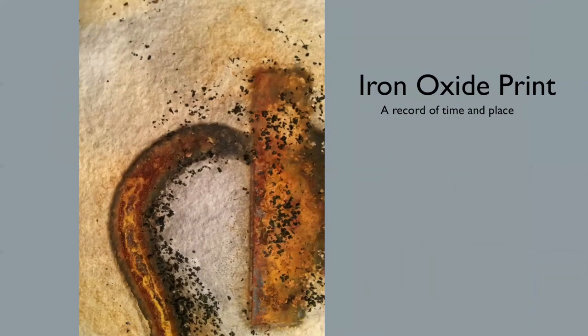Iron oxide print. This really is a kind of offbeat process that allows you to print from an iron object or a solution and create some really interesting images. I think of this as a record of time and place, because you can locate artifacts from specific geographic locations. I will show you in subsequent images how to mark a certain place and do some types of interventions with this process.